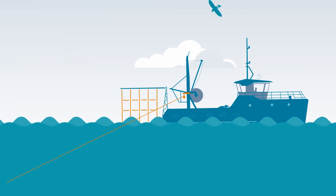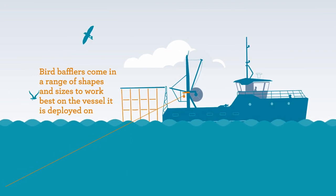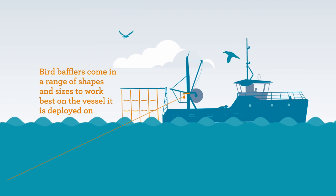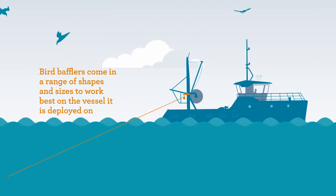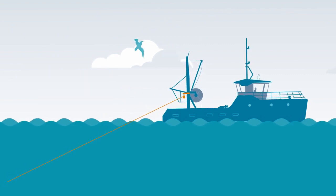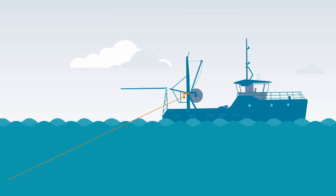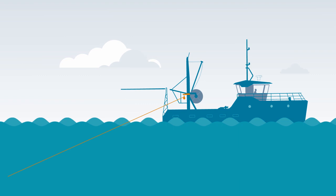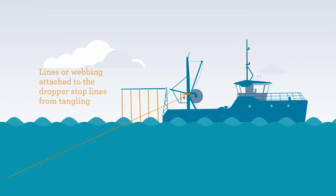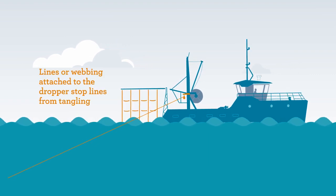Bird bafflers provide a protective curtain around the high risk area between the stern and where warp cables move in and out of the water. Bird bafflers are made up of one or more booms extending out from the stern of the vessel. Rigid dropper lines hang from the booms to the sea surface, creating a protective curtain.